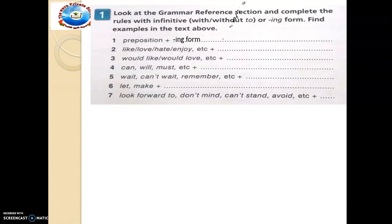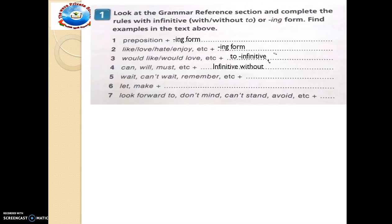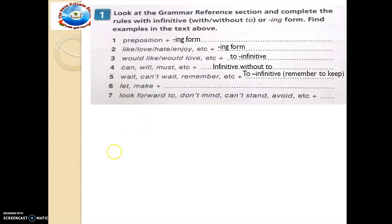The words like, love, hate take the ING form. But would like and would love take the to-infinitive. Modal verbs — can, will, must — take the infinitive without 'to'. And 'can't wait' takes plus to-infinitive. For example, remember to keep. Make sure you write these words down.